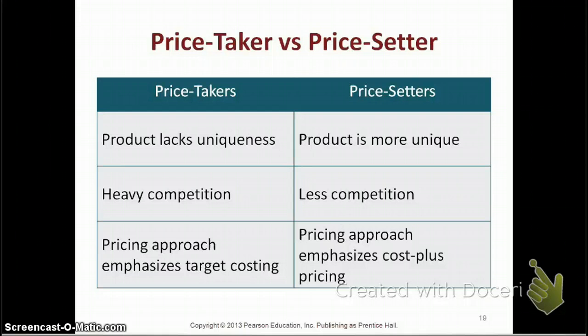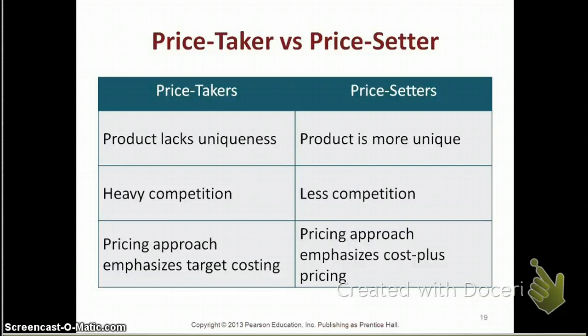On the other hand, price setters have products that are more unique. In a consumer's mind, they will be willing to pay more money for this particular product. For example, sticking to shampoos, the brand Matrix carries a shampoo that is $20 a bottle, while Pantene and others in the grocery store are about $3 to $4 a bottle. So Matrix is a price setter in this market. Price setters face less competition, and the pricing approach used for these companies is called cost plus pricing.